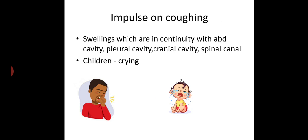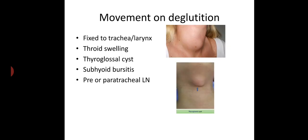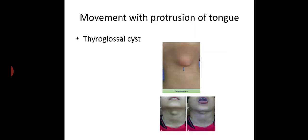Next, impulse on coughing. Swellings in continuity with the abdominal cavity, pleural cavity, cranial cavity, or spinal canal will have impulse on coughing or crying. For children, look for impulse on crying. Next, movement on deglutition — if the mass is fixed to the trachea or larynx, there will be movement on deglutition, as in thyroid swelling, thyroglossal cyst, subhyoid bursitis, or pre- or paratracheal lymph node.